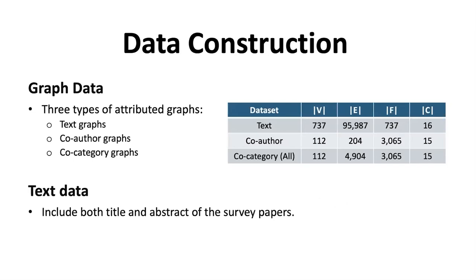For data construction, we construct three types of attribute graphs: a text graph, a co-author graph, and a co-category graph. We also construct the text data, including both title and abstract from each survey paper. For the text graph, we follow the setting of TextGCN, which means the text graph contains two types of nodes: document nodes and word nodes. Each document node has its corresponding category, but for the word nodes, we assign all word nodes to the last class. That is why the number of classes in the text graph is 16 rather than 15.